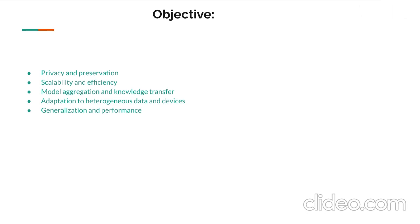Next, model aggregation and knowledge transfer: in Federated Learning, model aggregation is a critical step where the locally trained models from different devices or nodes are combined to create a global model. The objective is to design effective aggregation methods that can preserve the knowledge gained from individual models and produce a high-quality global model. This involves techniques such as federated averaging, weighted aggregation, and selective model updates.